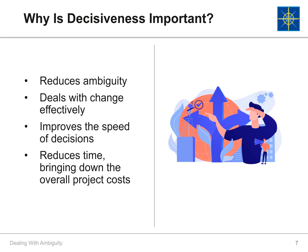Why is decisiveness important? There are many reasons. First, decisiveness reduces ambiguity — when a decision is made, the individual and team know what to do. Next, decisiveness helps us deal with change more effectively because we know what to expect based on the decision. In addition, decisiveness improves the speed of the decisions we make, preventing bottlenecks. When all this happens, less time is spent, so we help our NAVFAC projects stay within scope.